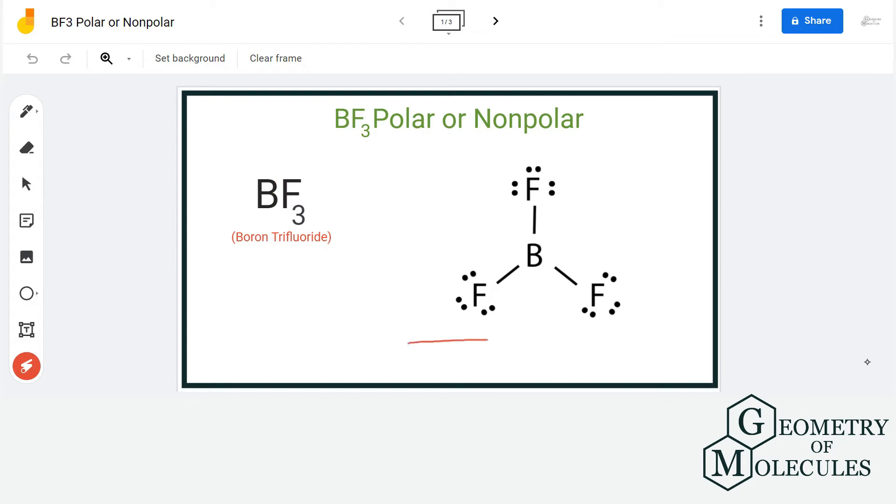So here you can see that each fluorine atom is sharing one of the valence electrons of boron and forming a bond. So here there are three single bonds in the structure.